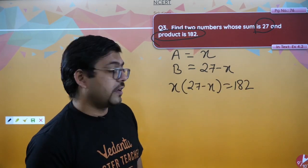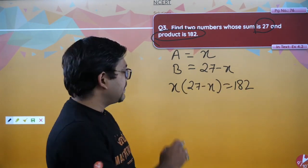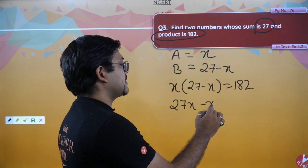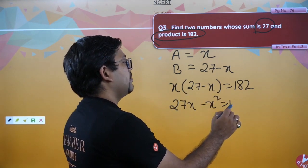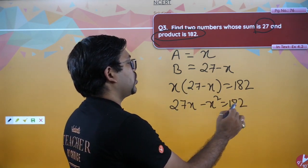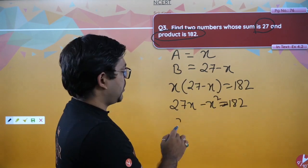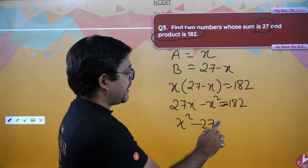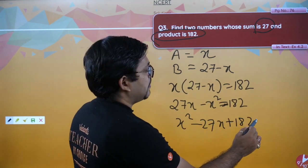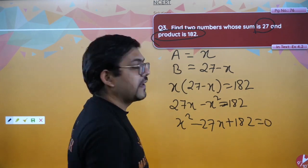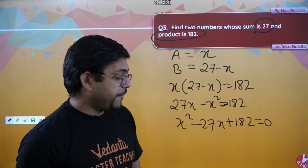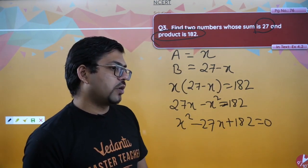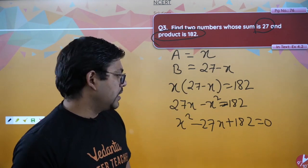Multiply: 27x minus x squared equals 182. Rearranging: x squared minus 27x plus 182 equals 0. Now solve. To factorize 182: 13 times 14 equals 182, and 13 plus 14 equals 27. So we break it as x squared minus 13x minus 14x plus 182 equals 0.